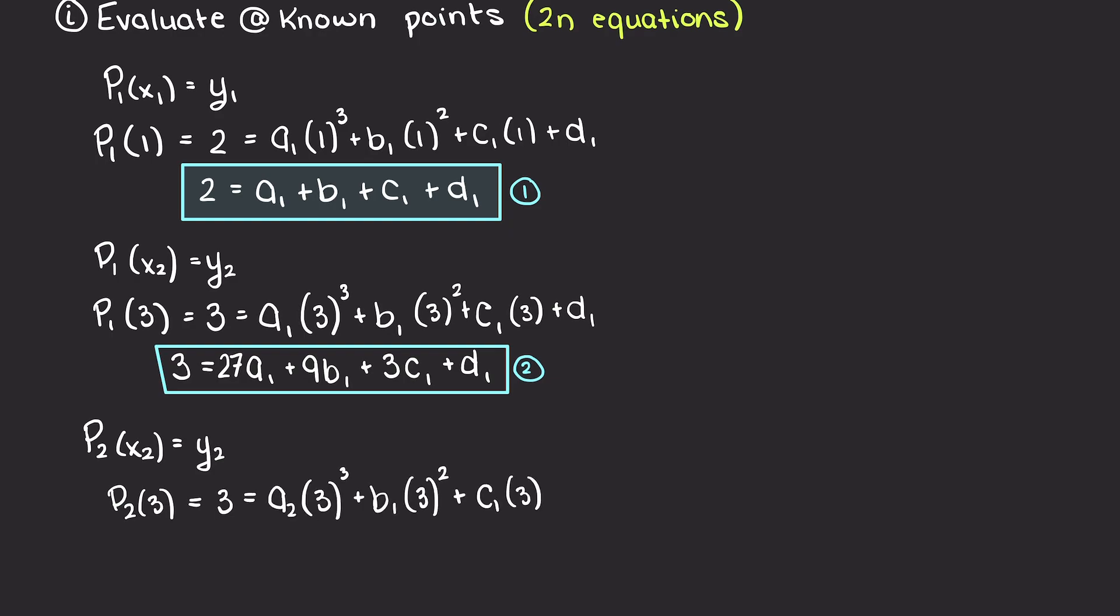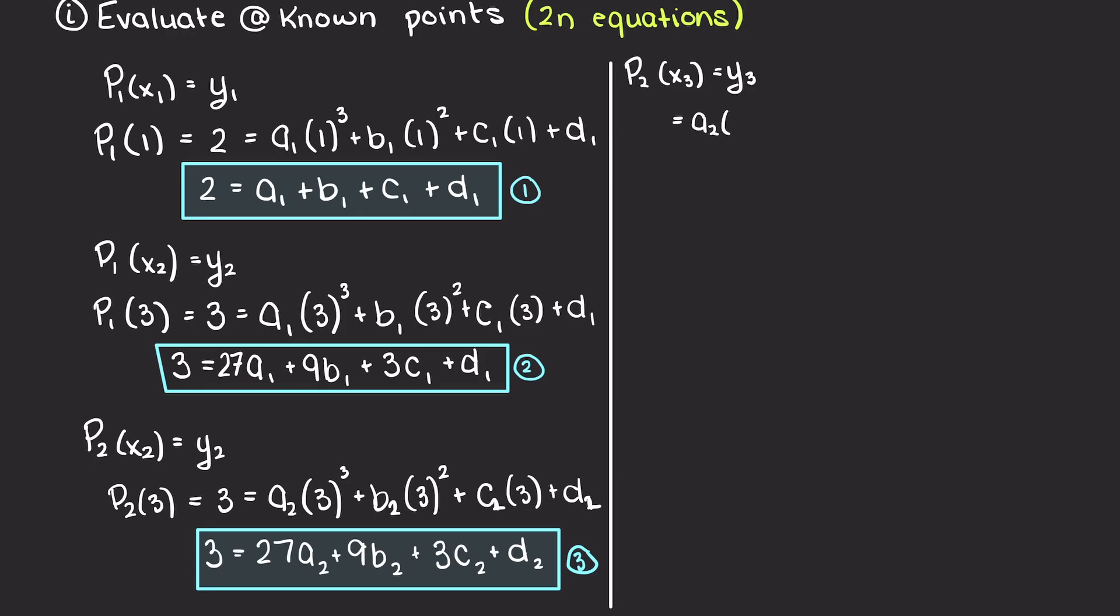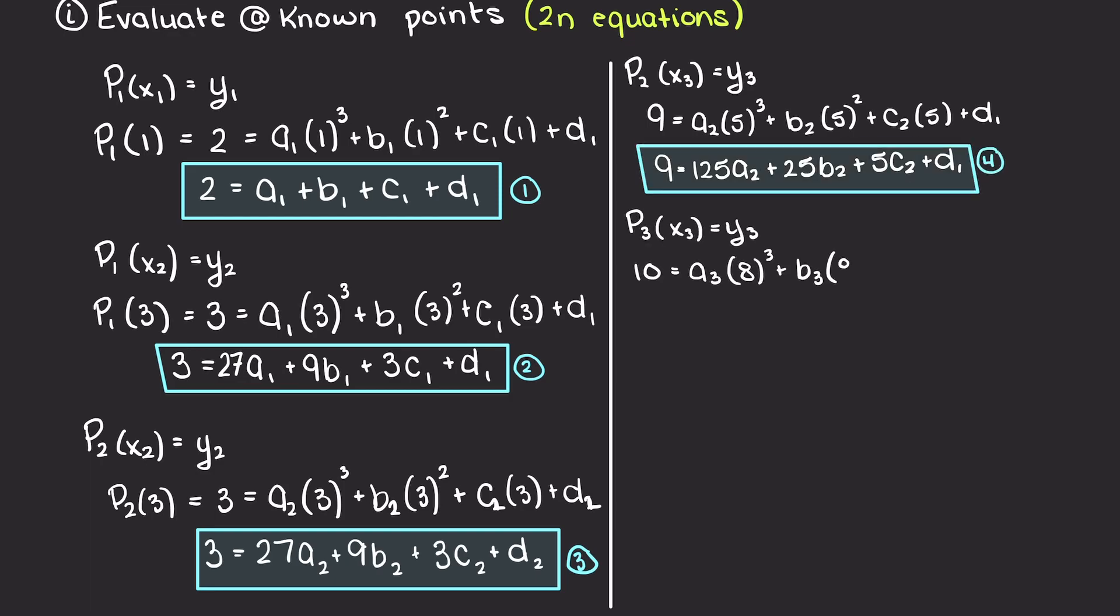All we're doing here is simply plugging in our x values and simplifying. But to elaborate a bit more, we are going to evaluate our first polynomial with its two data points, so x1 and x2. P2 will be evaluated at x2 and x3. And lastly, P3 will be evaluated at x3 and x4.